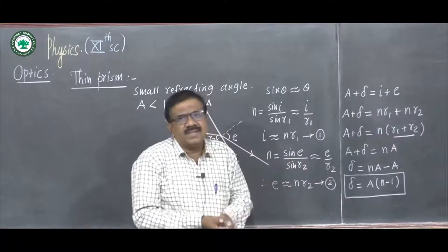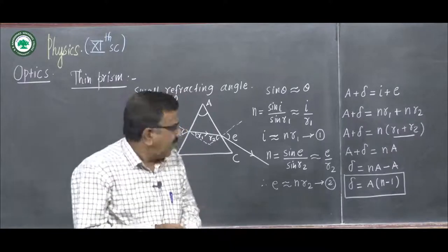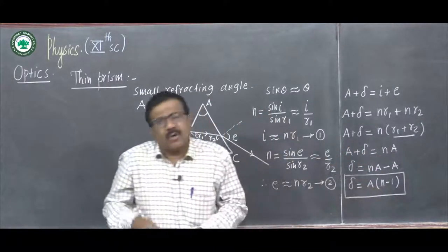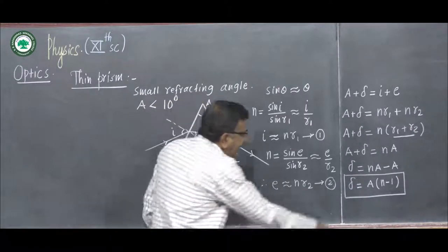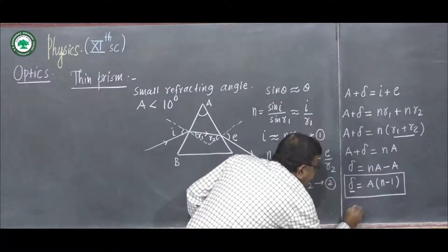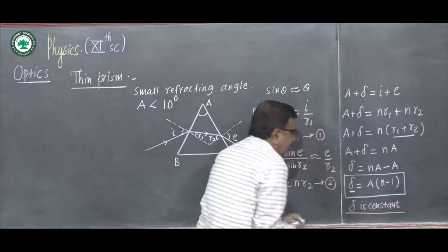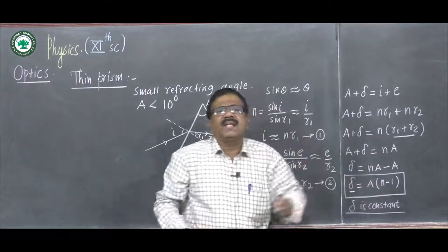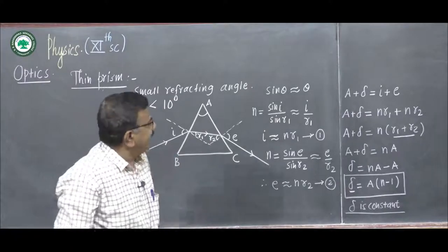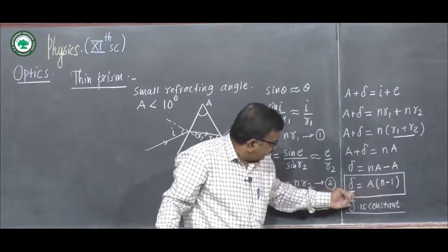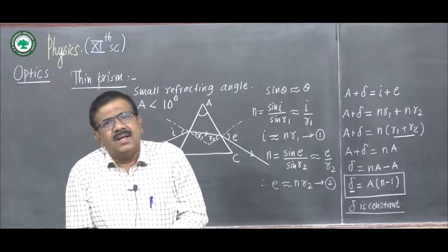Here δ is the angle of deviation, A is the refracting angle, and n is the refractive index of the prism. Since A and n are constant for a given thin prism, the angle of deviation is constant and it is independent of the angle of incidence — there is no term i in the expression.